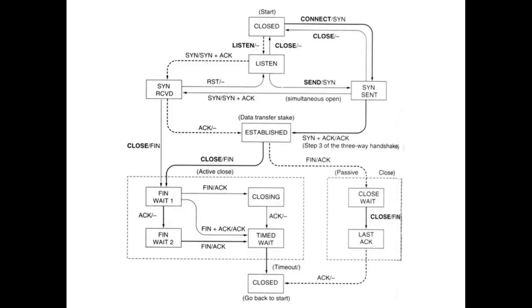Here is an example of the state machine for a TCP connection — this should all be review. A socket can be opened: there's a SYN, followed by a SYNACK, followed by an ACK. At that point it is established, data can be sent back and forth, and then finally you close the connection. When you close the connection, you send a FIN. If you receive a FIN, you send an ACK, then finish sending your own data, and then send your own FIN.